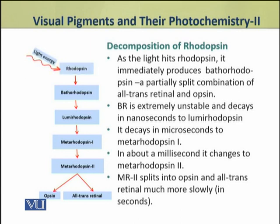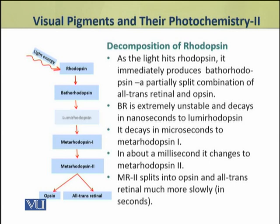Bathorhodopsin is a partially split combination of all-trans retinal and opsin. Bathorhodopsin is extremely unstable and decays in nanosecond time to lumirhodopsin. Lumirhodopsin takes about a microsecond to decay into metarhodopsin 1, and metarhodopsin 1 changes into metarhodopsin 2 in about a millisecond.